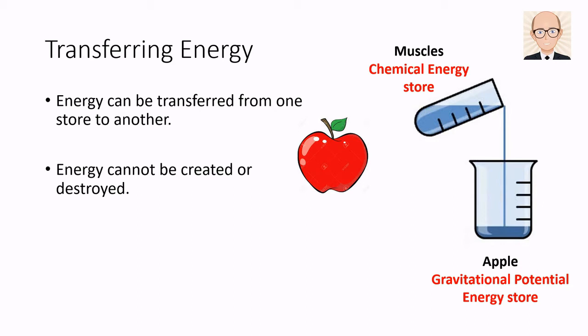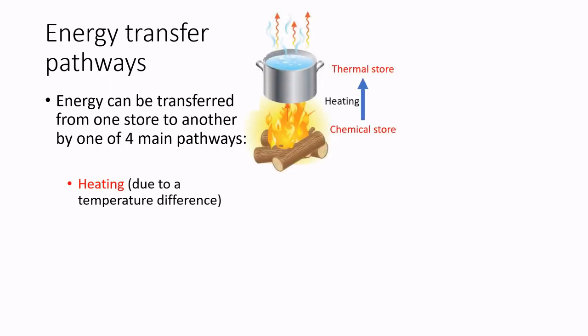Let's now have a look at the methods by which energy can be transferred. There are four methods, or energy transfer pathways. The first is the heating pathway. Here, energy is transferred from one store to another, due to the difference in temperature between the objects. Energy will flow from the hotter object to the cooler one.